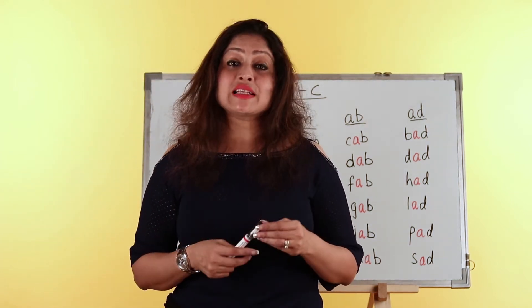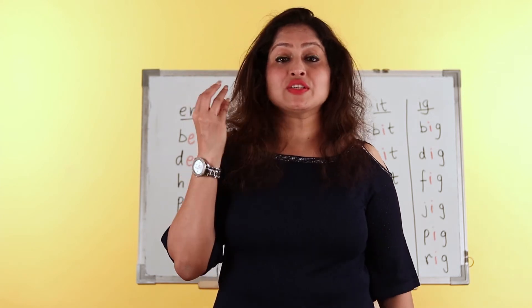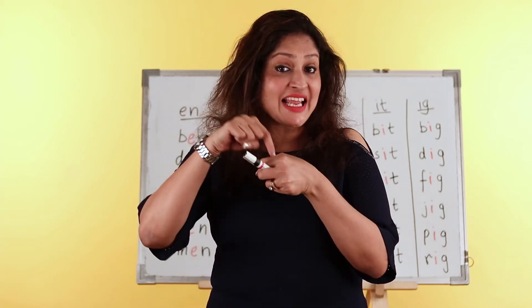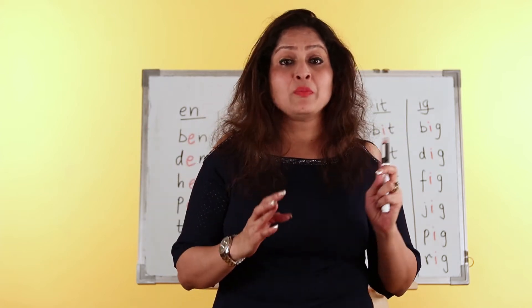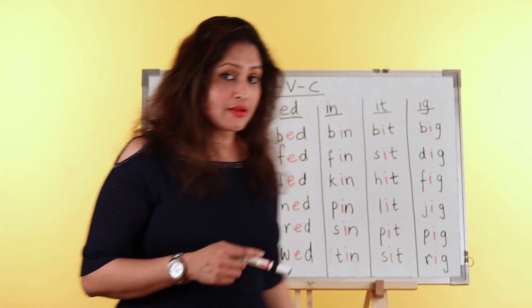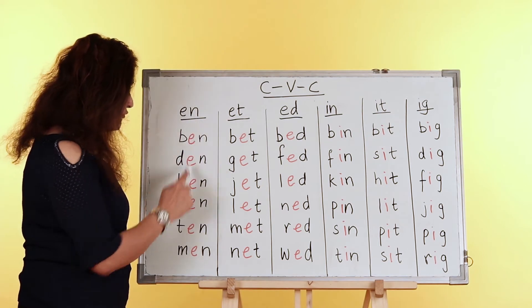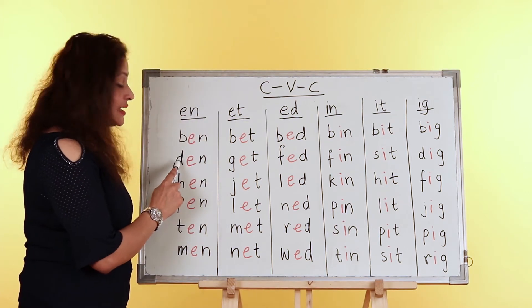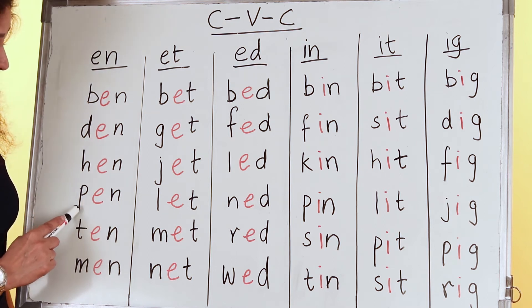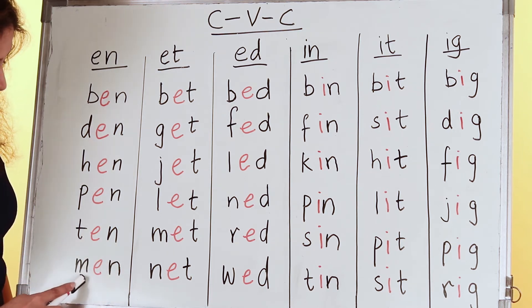We are moving on to the next vowel, E, which says 'eh' as in 'egg.' Remember the hand gesture for that — 'eh' for egg. Next I'm going to do the letter I, which says 'i' as in 'in.' There are many word families you can form with these two vowels. Let's look at the EN family: BEN, DEN, HEN, PEN, TEN, and MEN.